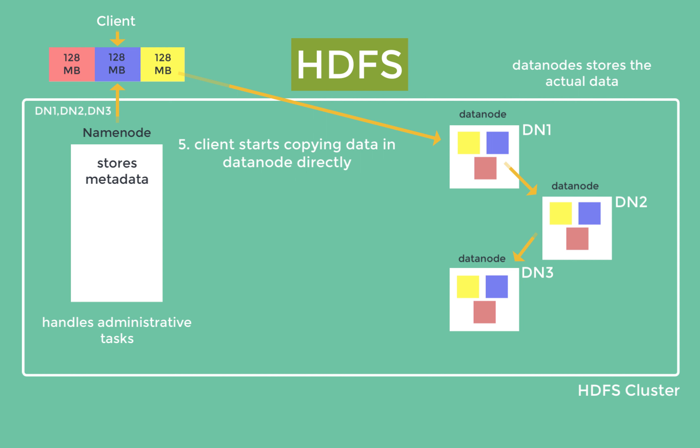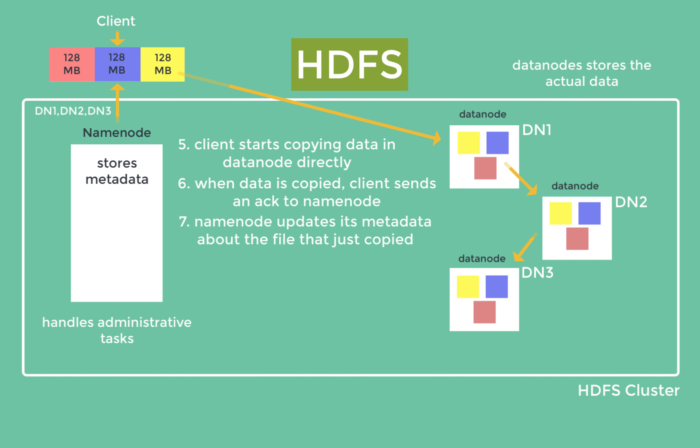For example, if the replication factor is three and a block is copied to one DataNode, that DataNode takes responsibility for creating the other two replicas on different DataNodes. This ensures data redundancy and fault tolerance — if a DataNode fails, the data remains accessible from the other replicas. Once the data is successfully copied to the required DataNodes, the client sends an acknowledgement to the NameNode indicating that the data copying process is complete. The NameNode then updates its metadata with information about the new file's location, data blocks, and their respective DataNodes, making the file accessible to other clients.